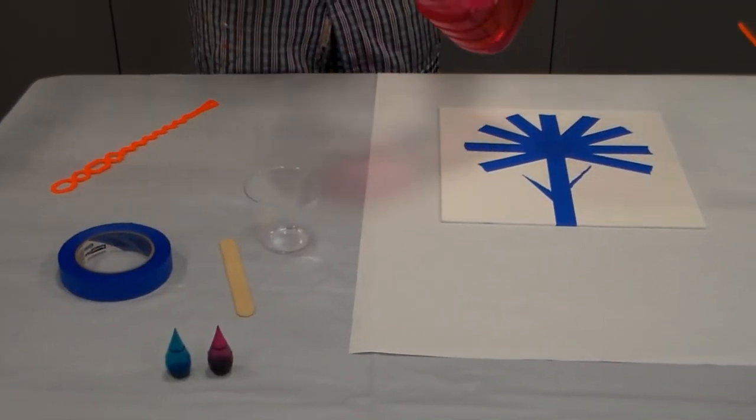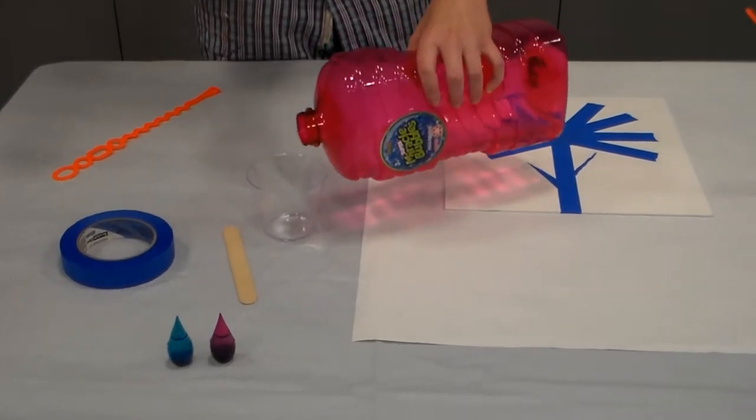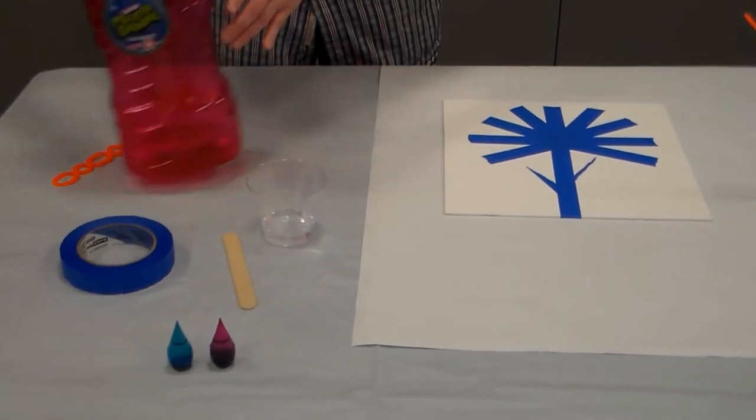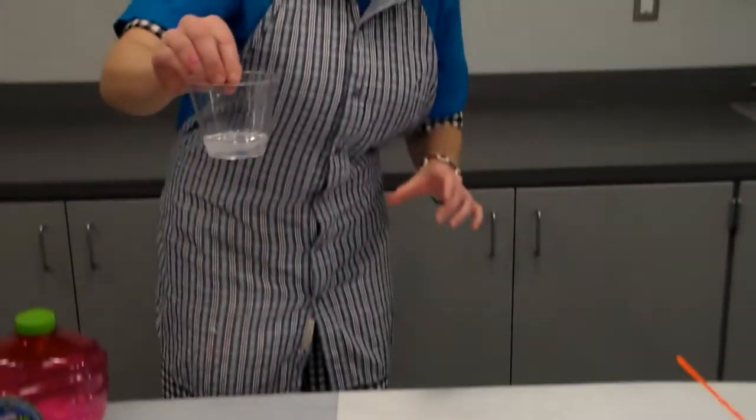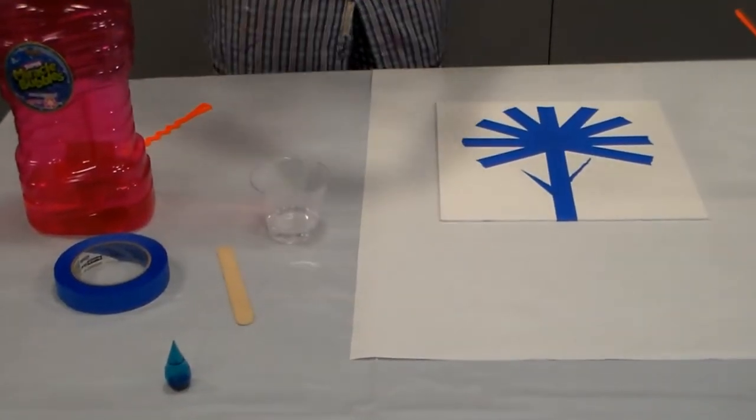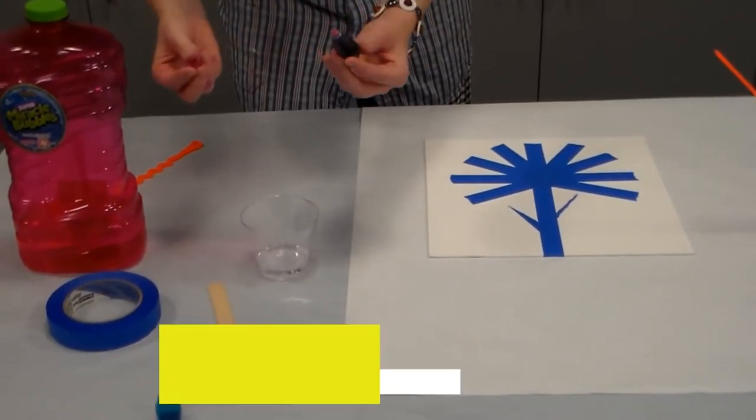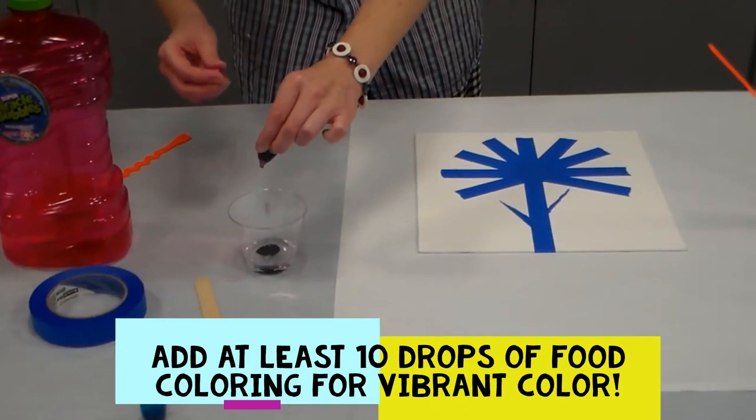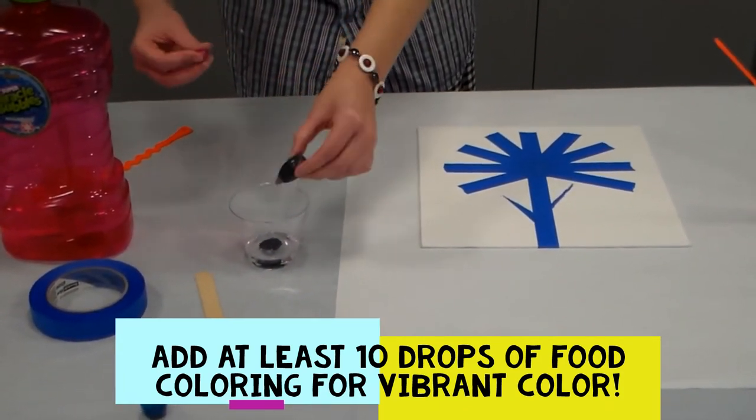Okay the first thing you want to do is add a little bit of bubble solution to your cup, probably about this much, and you're going to add quite a bit of food coloring. I'd say at least 10 drops because you want this to have a nice rich vibrant color.